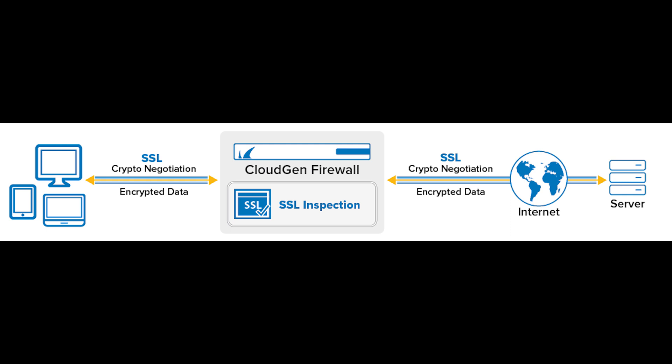HTTPS inspection provides several network performance and security benefits like improved application identification, malicious content filtering, URL filtering enforcement, and much more.